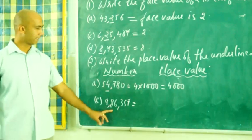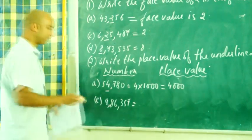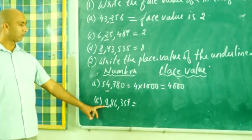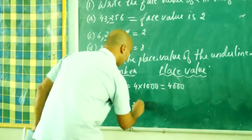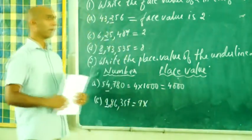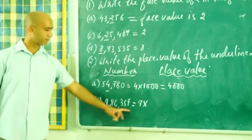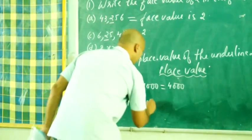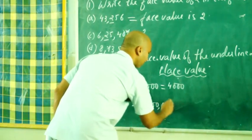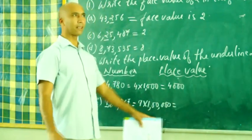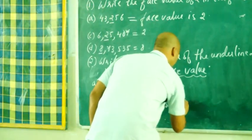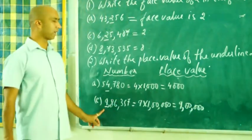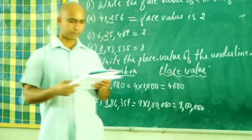Next, 9,86,357. And the digit that is underlined is 9. So you have to find the place value of 9. So you can write the number, that is 9. Now 9 is in what place? 1, 10, 100, 1000, 10,000, lakh. So 9 is in lakh case. So you can multiply 9 by 1 lakh. So 9 lakh. So the place value of 9 will be 9 lakh.